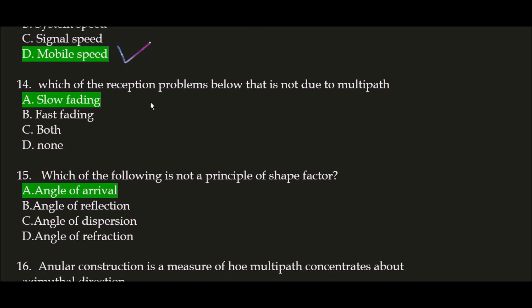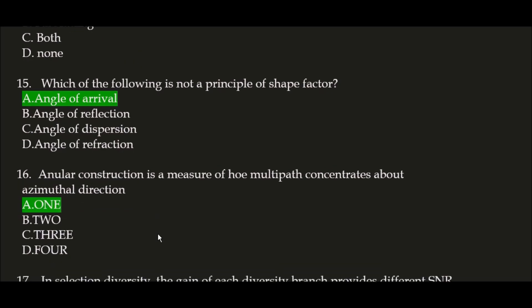Next question: which of the reception problems below is not due to multipath? The answer is slow fading. Slow fading is the reception problem that is not due to multipath. Next question: which of the following is not a principle of shape factor? The correct answer is option A, angle of arrival. Angle of arrival is not a principle of shape factor.